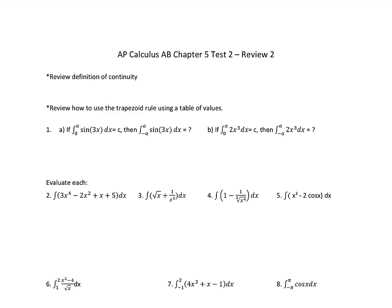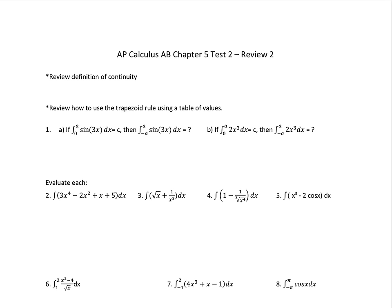The first one is the definition of continuity, so make sure you review that. Remember, there are three parts to it. The first part is that if you are approaching x at a value a, f of a must exist. The second part is the limit as x approaches a exists, so make sure you test it from the left side and the right side. And then the third part: this limit as it approaches a must equal f of a.